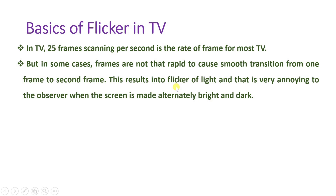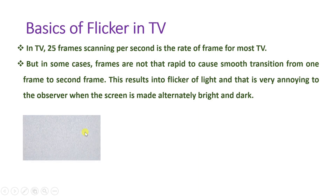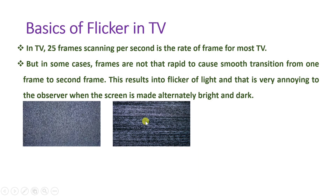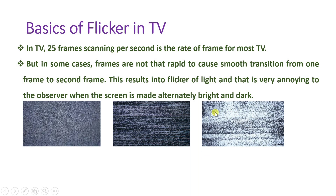That distortion results in flicker, and that flicker of light is very annoying to the observer when the scene is made alternatively light and dark. Bright and dark screens are happening alternately, resulting in flicker. You can see some cases where bright and dark spots are continuously being created — these are patterns of flicker.